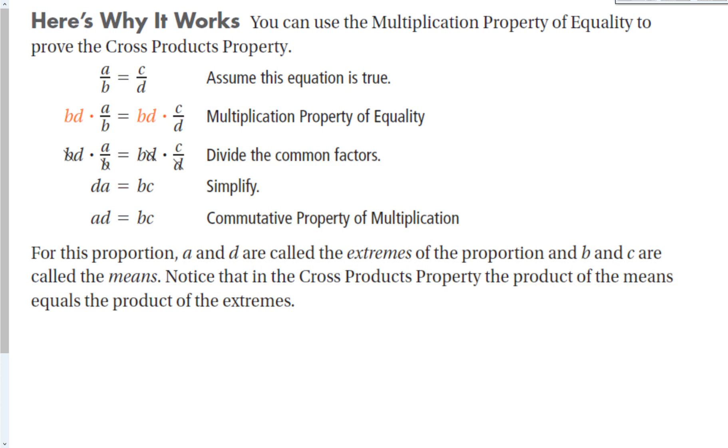This is a pretty useful property to solve proportions. Let's see why this actually works. This is a proof. We can use the multiplication property of equality to prove the cross products property. We'll get to do a lot of proofs next year in geometry, but here's a pretty basic one. If we assume that our starting equation is true, A over B is equal to C over D, we're trying to show that the cross products are equal to each other. I can multiply both sides of this equation by anything I want. So I'm choosing to multiply both sides by BD. The B's cancel on the left, the D's cancel on the right, and that leaves me D times A is equal to B times C.